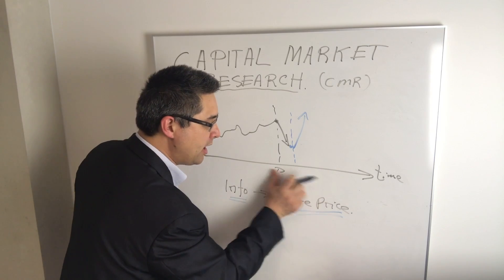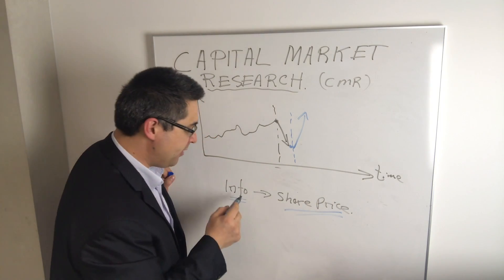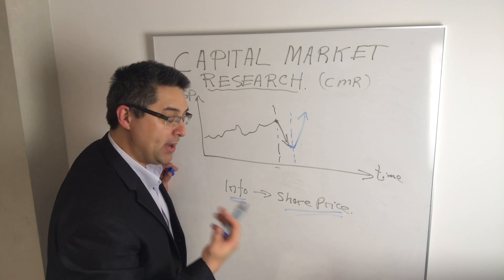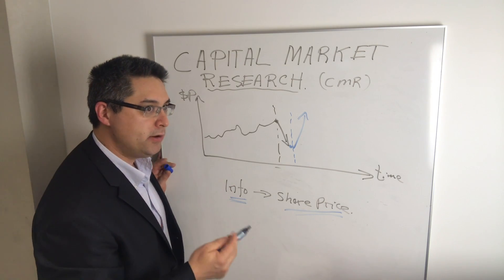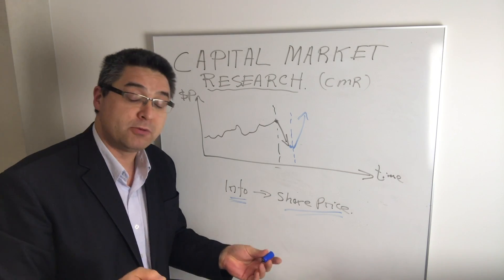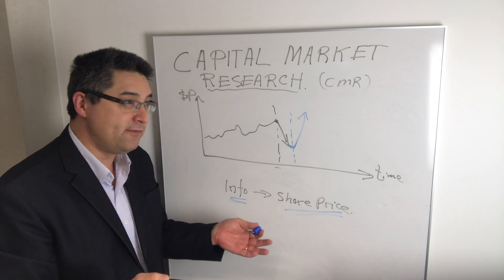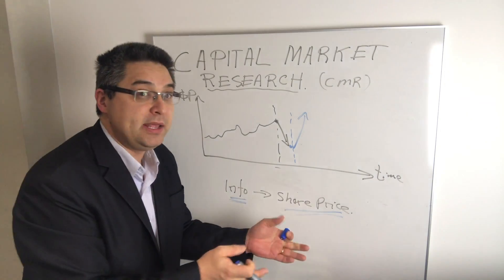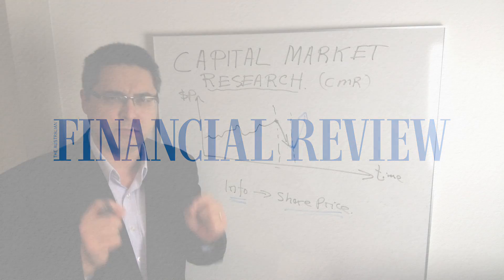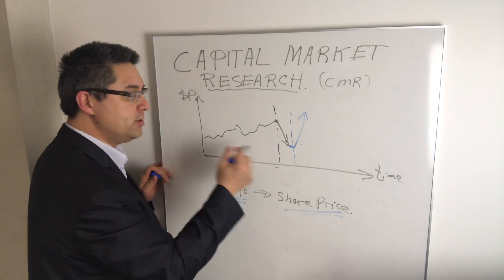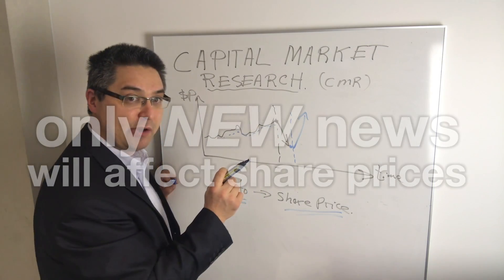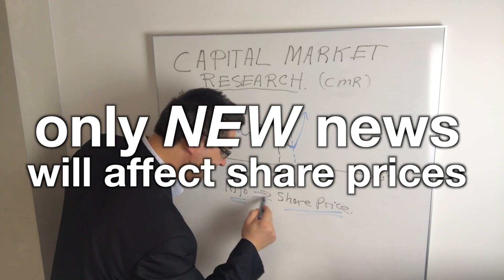However, we have a small problem: we can't actually observe information directly. There is an information-data divide, where data is simply a bunch of facts but information is actually useful. So how do we know what news, tweets, or random things on Reddit will actually affect share prices? A lot of media content — whether social media or traditional media like the Financial Times — may simply be repeating old news, which in efficient markets would already be impounded into the share price. Only new news will affect the share price.